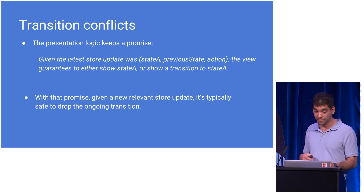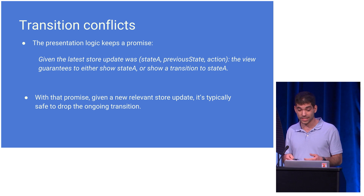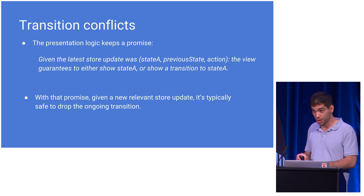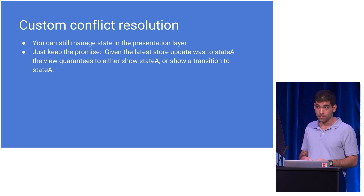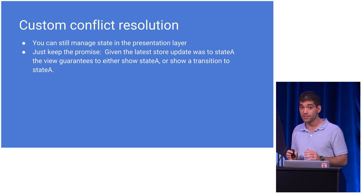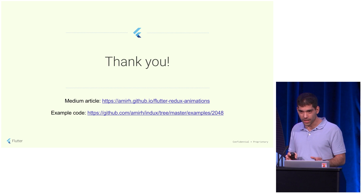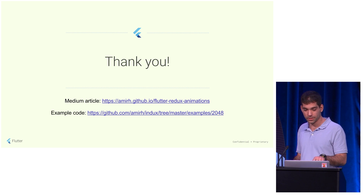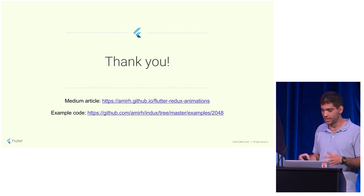To get that fallback — the jump cut effect by default — we need to make sure that our UI code keeps a promise: given that the last store update was to state A, it is either showing state A or showing a transition to state A. If you want more custom conflict resolution, something fancier than the jump cut effect, you can still do that by managing more state in the presentation layer. Just make sure you still keep that promise. This was quite a lot to squeeze into five minutes, so there's also a Medium article with more details, and the example code for the 2048 game is available on GitHub. Thank you.